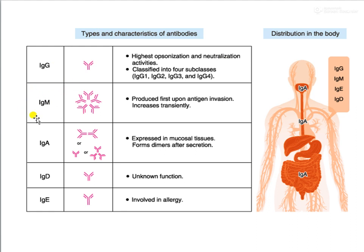Let's talk about IgM first. IgM is a pentamer molecule — it is the first antibody formed when an antigen arrives, and it increases transiently. So a recent infection is denoted by the presence of IgM. Five antibody molecules are linked together to form this pentamer molecule.